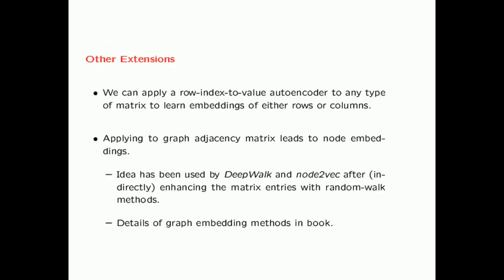This general idea of row-index-to-value autoencoder is very useful for any type of matrix to learn embeddings of either rows or columns. For example, we can apply this idea to a graph adjacency matrix and it leads to node embeddings. This idea has actually been used by DeepWalk and Node2Vec after indirectly enhancing the matrix entries with random walk methods. And again, you can find some details of these graph embedding methods in the book.